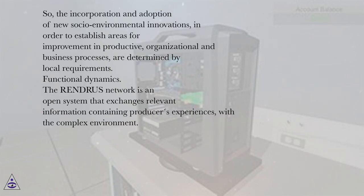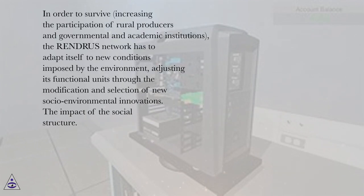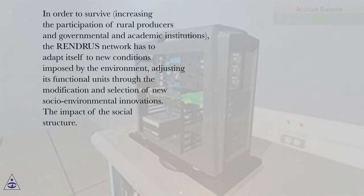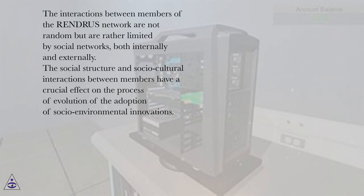Regarding functional dynamics, the Rindris network is an open system that exchanges relevant information containing producers' experiences with the complex environment. In order to survive by increasing the participation of rural producers and governmental and academic institutions, the Rindris network has to adapt itself to new conditions imposed by the environment, adjusting its functional units through the modification and selection of new socio-environmental innovations. The interactions between members of the Rindris network are not random but are rather limited by social networks, both internally and externally, and the social structure and socio-cultural interactions have a crucial effect on the process of evolution and adoption of socio-environmental innovations.